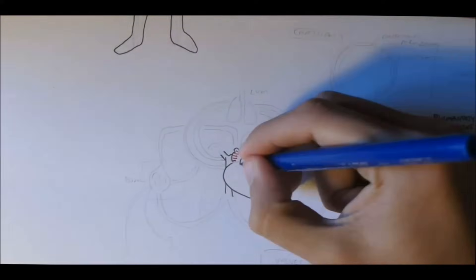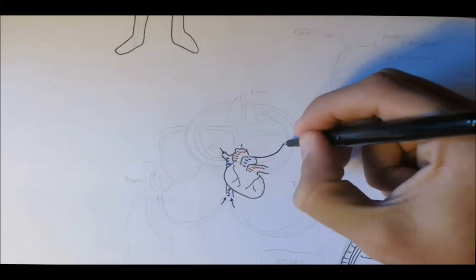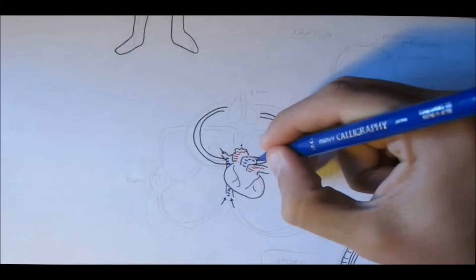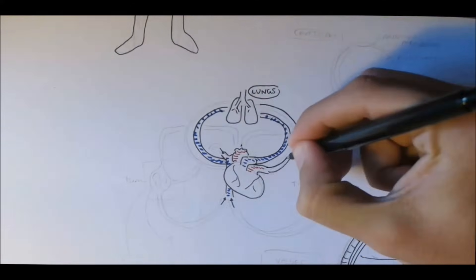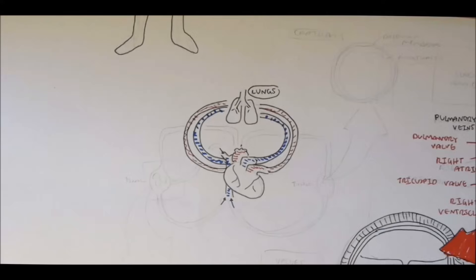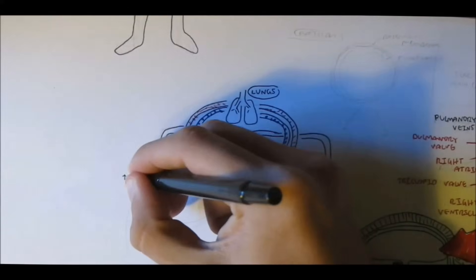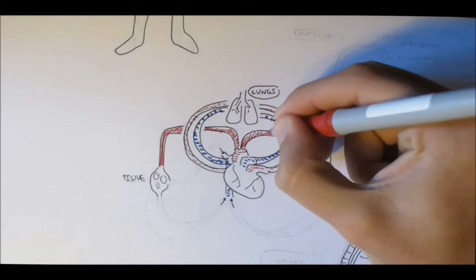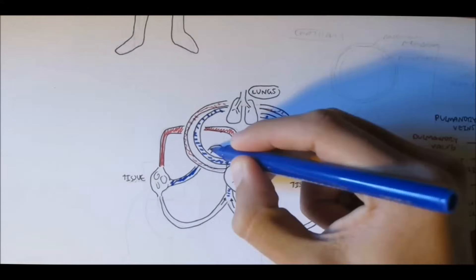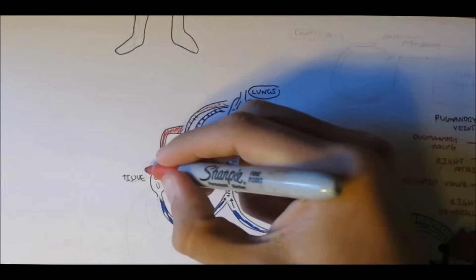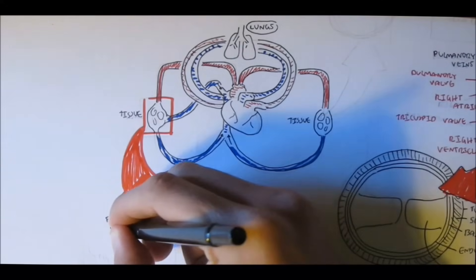To go over the overall picture: pulmonary arteries carry deoxygenated blood from the heart to the lungs to be reoxygenated. This oxygenated blood then travels through the pulmonary veins back to the heart, which pumps it around the body to body tissues via the aorta. The tissues use oxygen and return CO2 — deoxygenated blood — back to the heart, and the cycle continues.